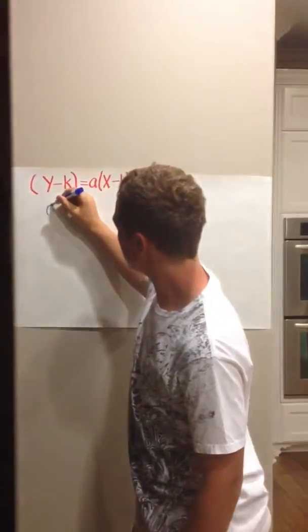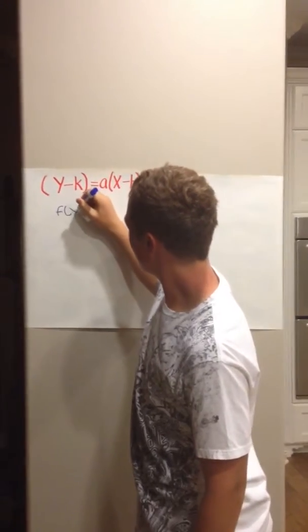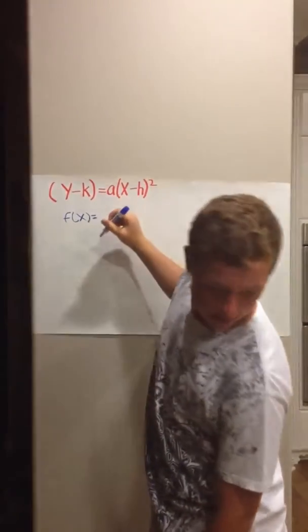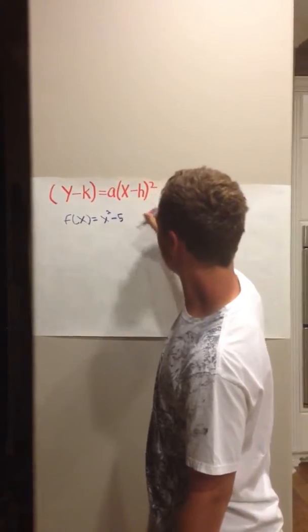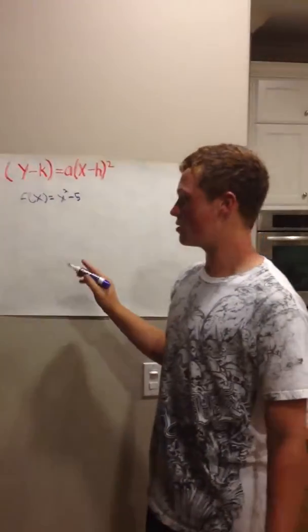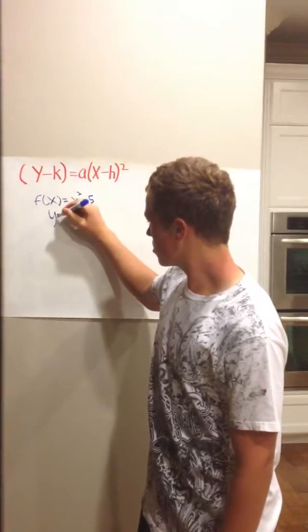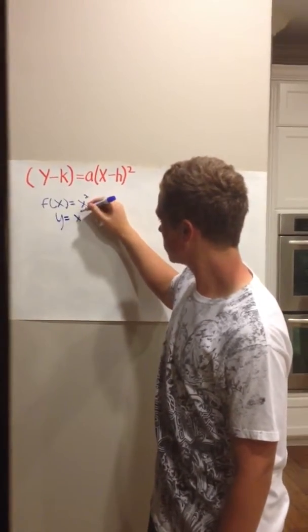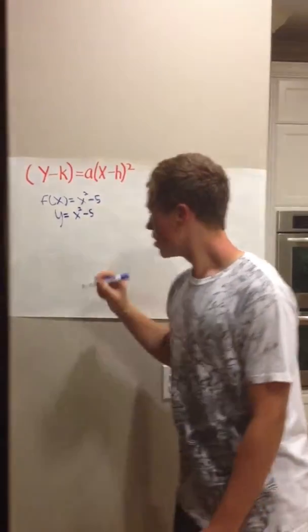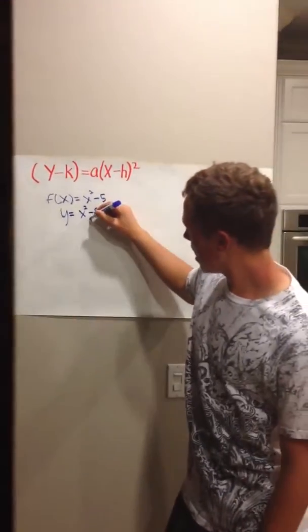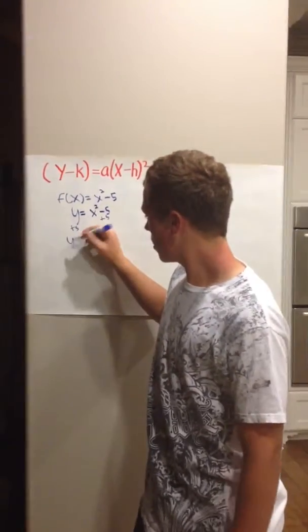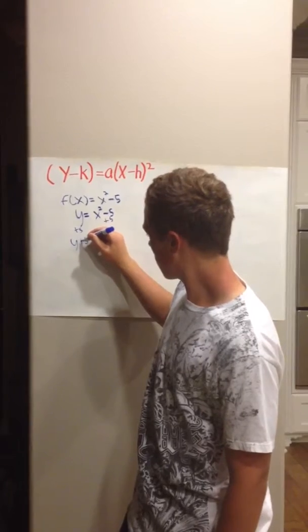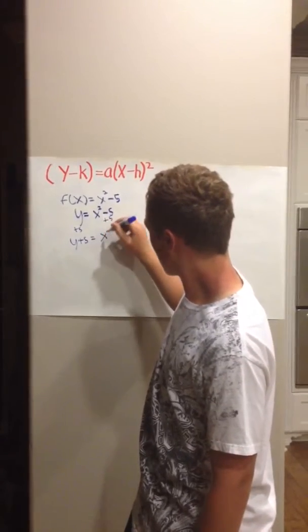Your first problem will be f of x equals x squared minus 5. Now, first of all, your f of x is usually just going to equal y. So you can write it out like y equals x squared minus 5. Now, to get this into form, you must add the 5 to the y side to make it y plus 5 equals x squared.